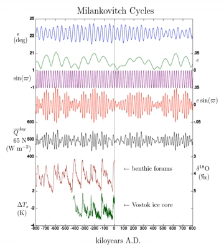Milankovitch emphasized the changes experienced at 65 degrees north due to the great amount of land at that latitude. Land masses change temperature more quickly than oceans, because of the mixing of surface and deep water and the fact that soil has a lower volumetric heat capacity than water.